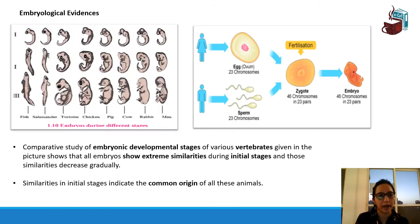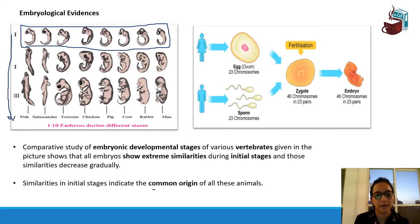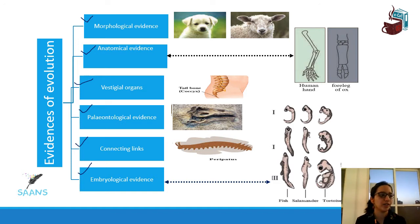We saw embryological evidence — how in the initial stages all organisms show extreme similarities. These similarities go on decreasing as they grow, but this extreme similarity shows that they come from the same origin. Then we understood the evidences of evolution: morphological evidence, anatomical evidence, vestigial organs, paleontological evidence, connecting links, and embryological evidence.